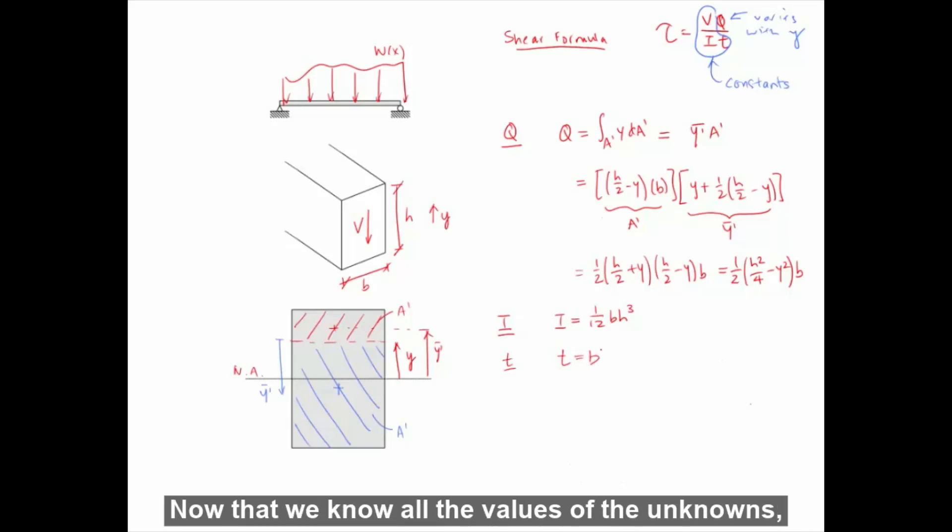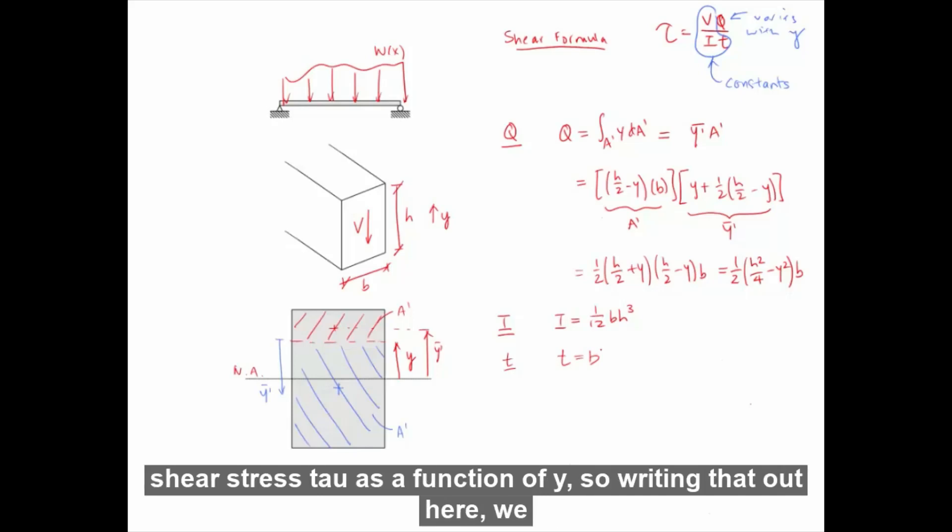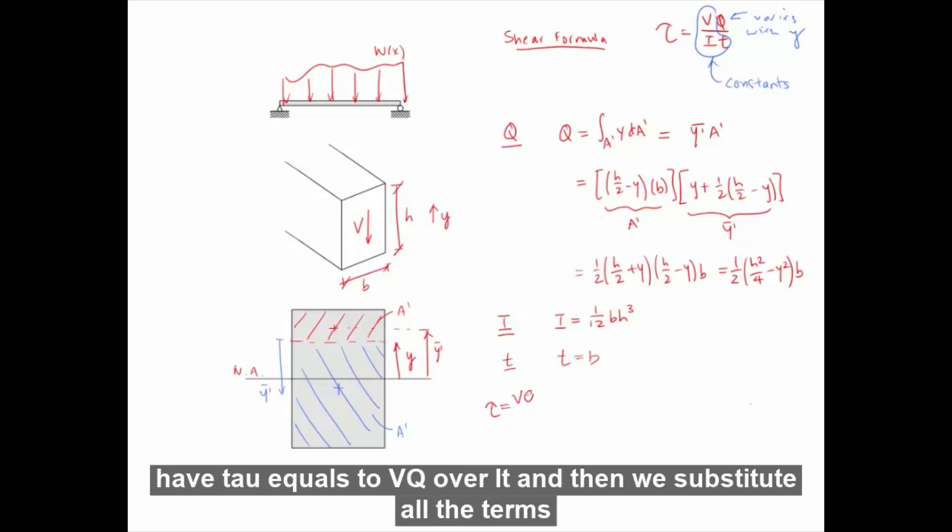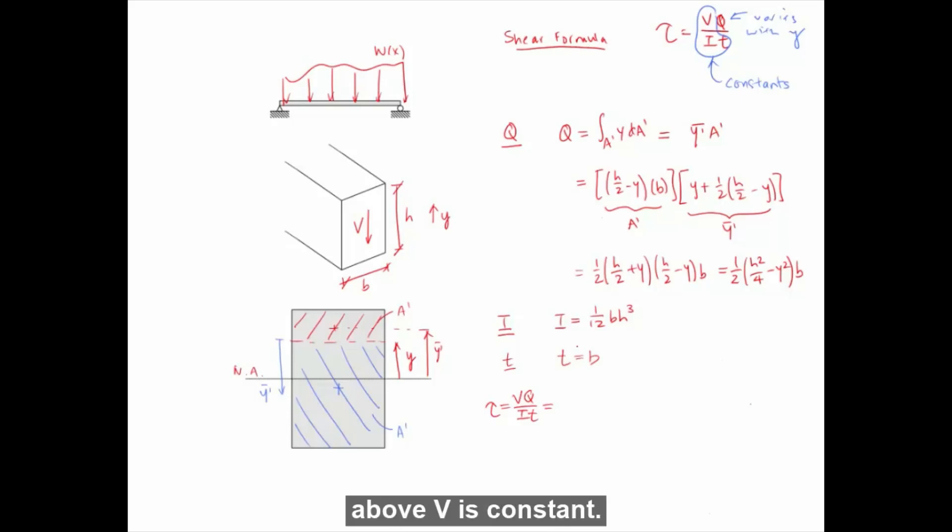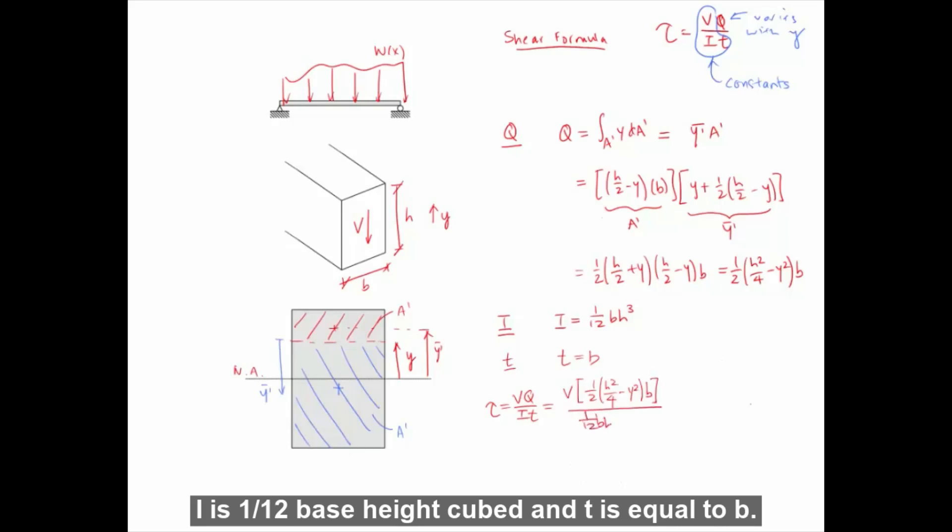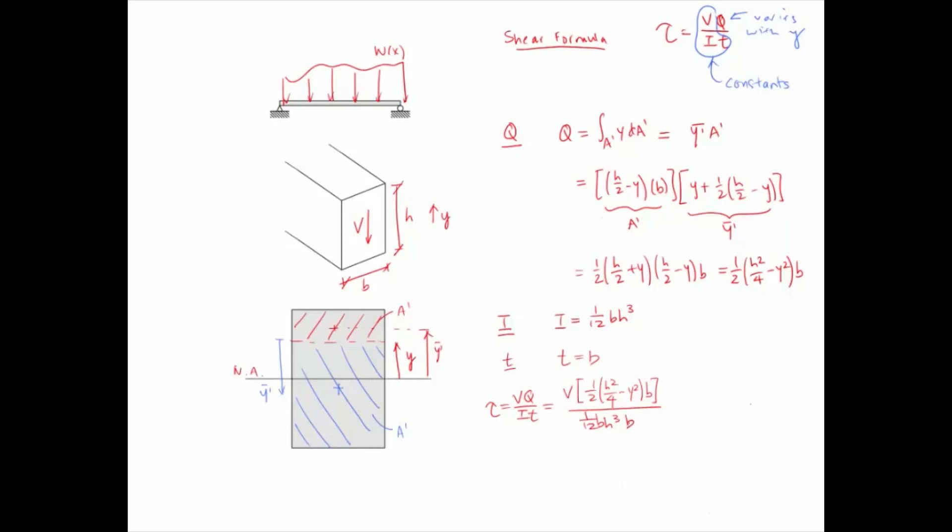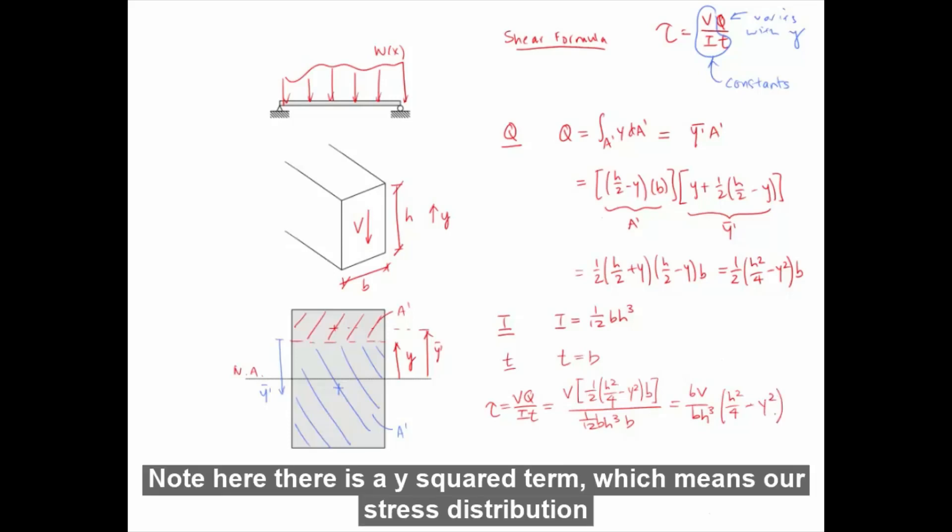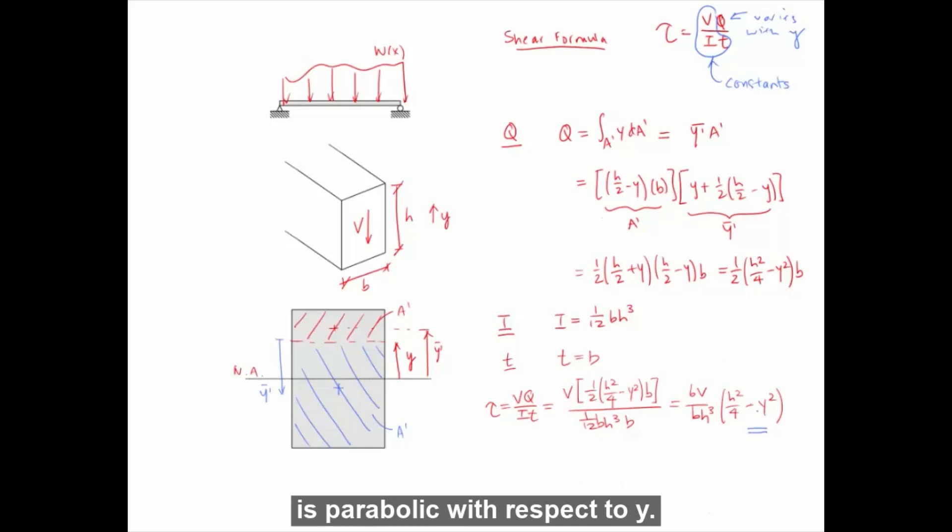Now that we know all the values of the unknowns, we can substitute them back into the shear formula to solve for the shear stress τ as a function of Y. So writing that out here, we have τ equals VQ over IT, and then we substitute all the terms above. V is constant. Here's Q. I is 1 over 12 base height cubed, and T is equal to B. This simplifies to... Note here there is a Y squared term, which means our stress distribution is parabolic with respect to Y.